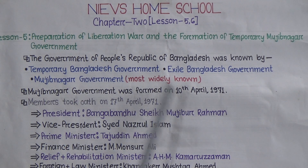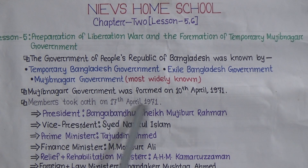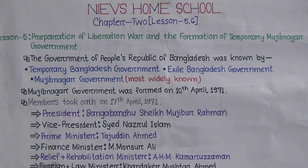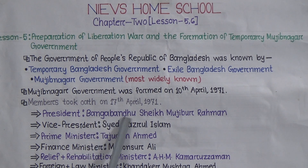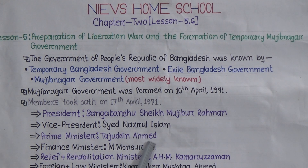The Mojibnagar Government was first formed on 10th April 1971, and the members took oath on 17th April 1971. The president was Bangabandhu Sheikh Mujibur Rahman. The vice president was Syed Nazrul Islam, who served as acting president in the absence of Bangabandhu Sheikh Mujibur Rahman. The prime minister was Tajuddin Ahmed. The finance minister was M. Mansur Ali.